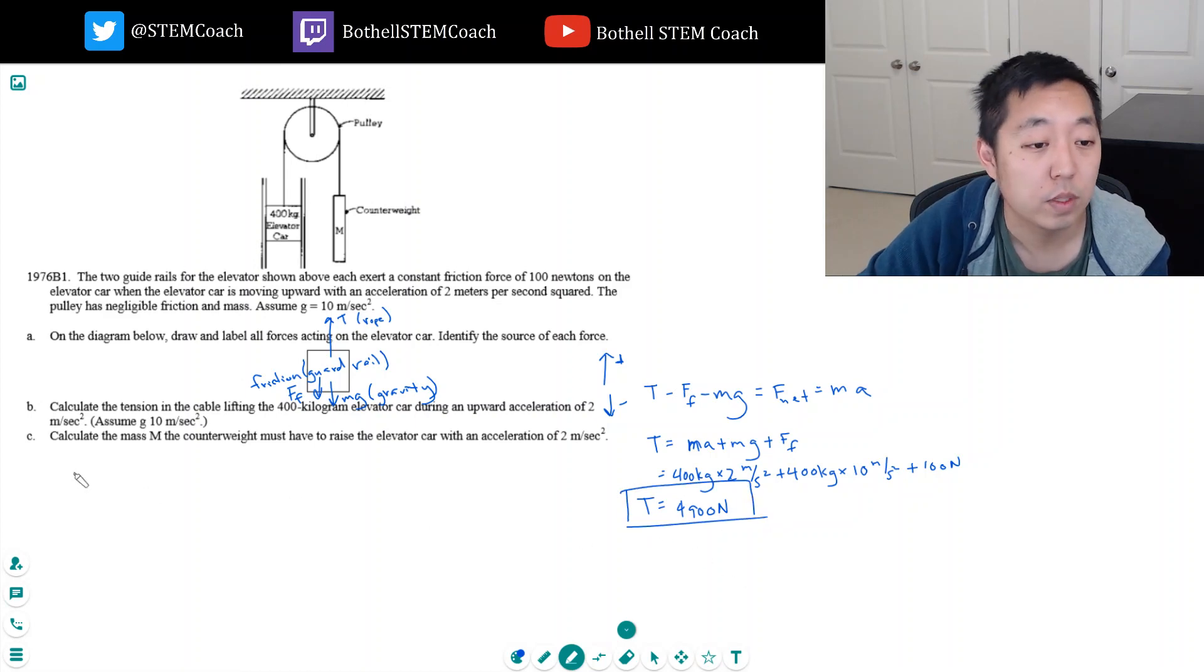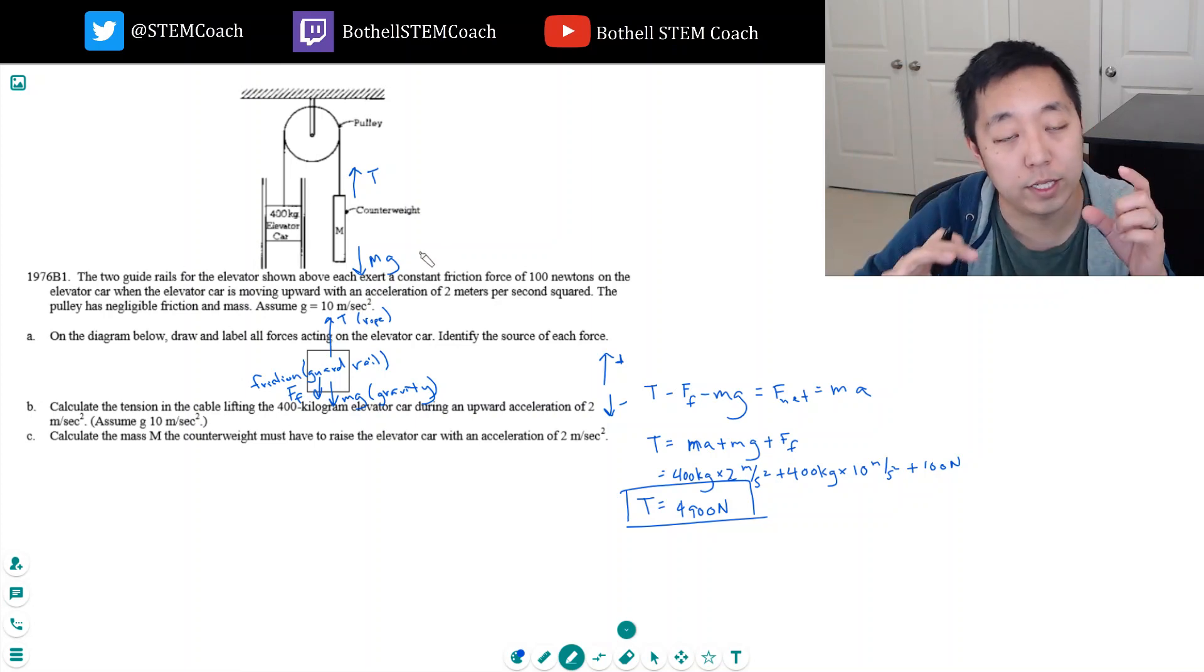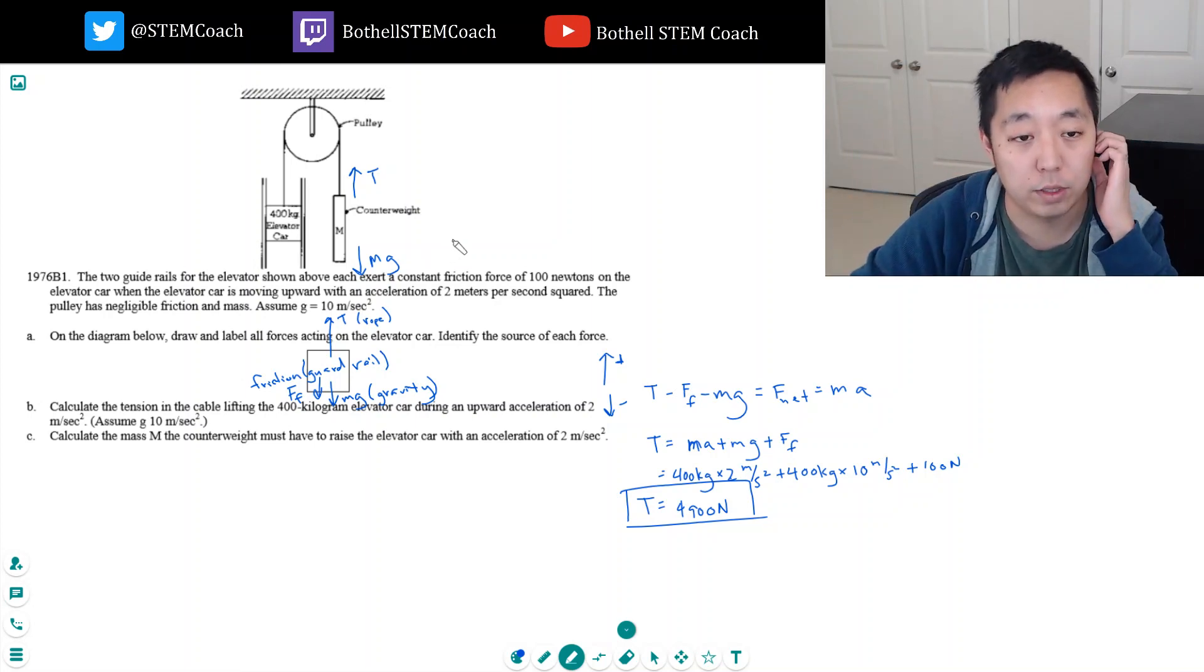All right, part c: calculate the mass of the counterweight needed to raise the elevator car with an acceleration of 2 meters per second squared. Okay, so now let's do the free body diagram on the counterweight. I got a tension here and I got an mg going down here. So his net force equation - in this case because I know he's going downward, I'm going to say down is positive when I do this equation.